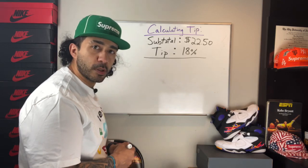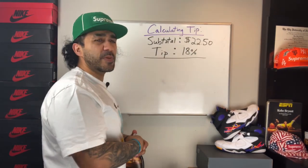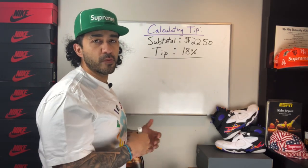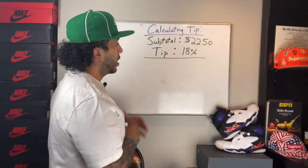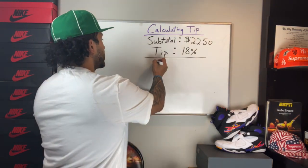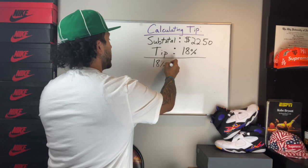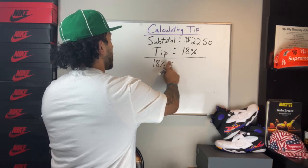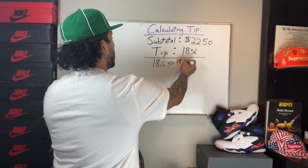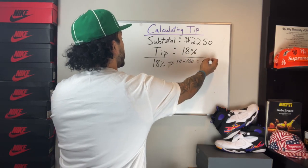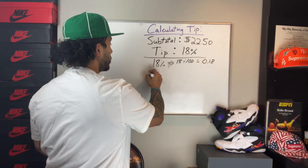Here we have twenty-two dollars and fifty cents. Customarily people like to tip fifteen percent, but let's say you want to be nice and tip eighteen percent. What we're going to do is take that eighteen percent and convert it into a decimal — eighteen divided by one hundred — which gives us zero point one eight.